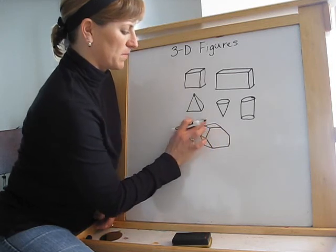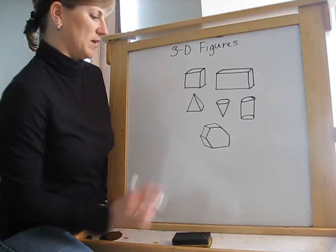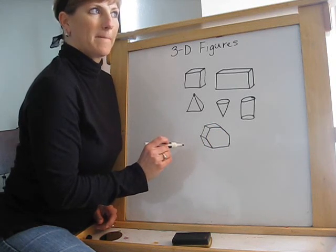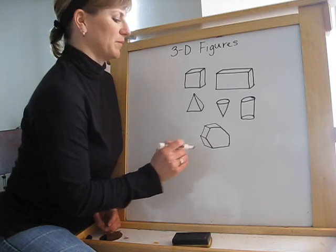And there we go. That would be a 1, 2, 3, 4, 5, 6 hexagon. Hexagon. All right?